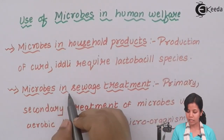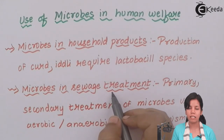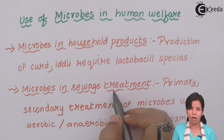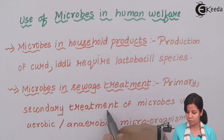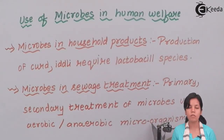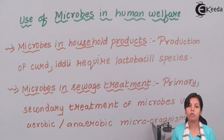The next topic is microbes in sewage treatment. Sewage refers to wastewater treatment — the same water which is treated by the municipality, the wastewater that comes out of your house. Primary and secondary treatment of sewage uses aerobic or anaerobic microorganisms. Aerobic means organisms which require oxygen, and anaerobic means organisms which do not require oxygen and can thrive on carbon dioxide.